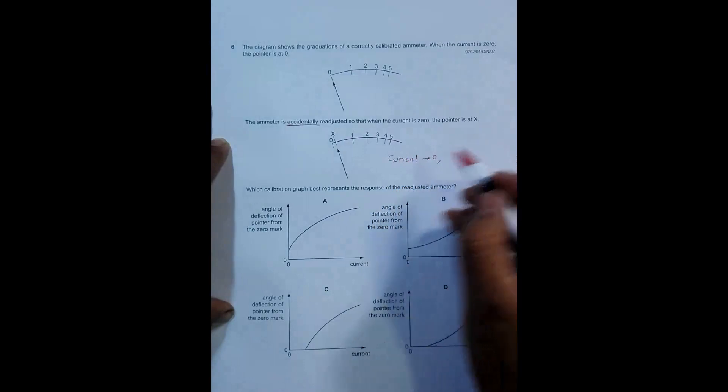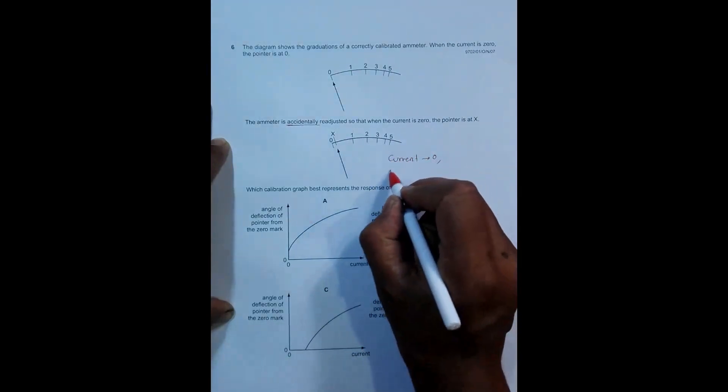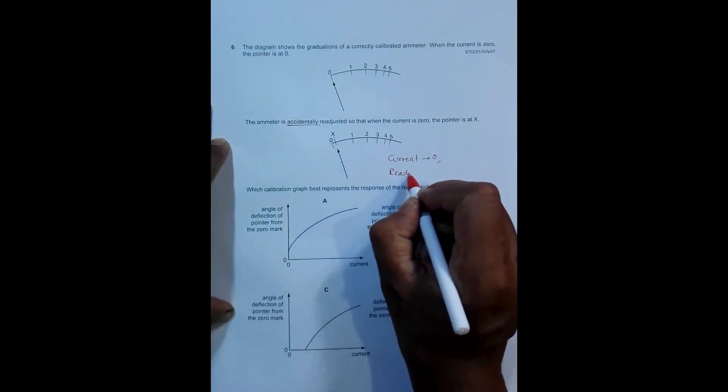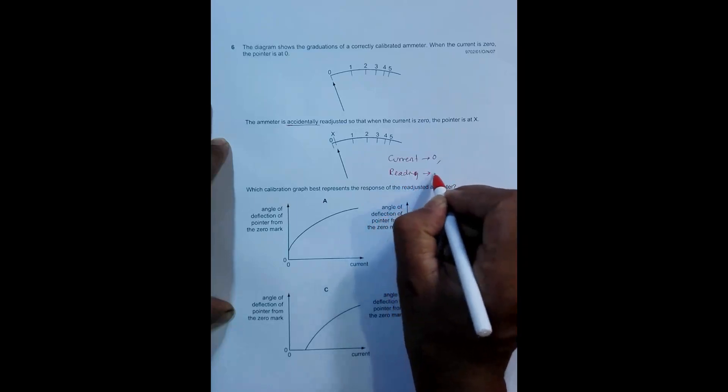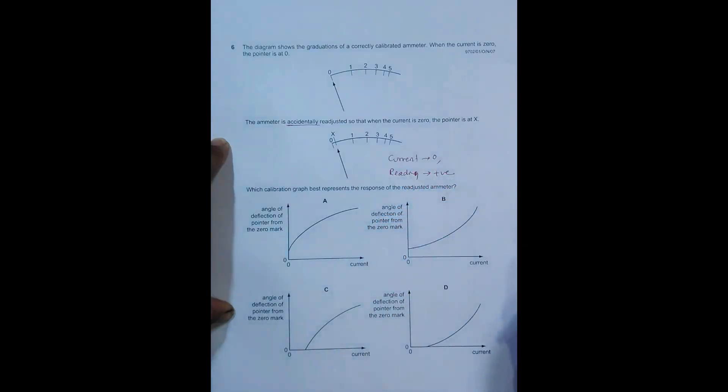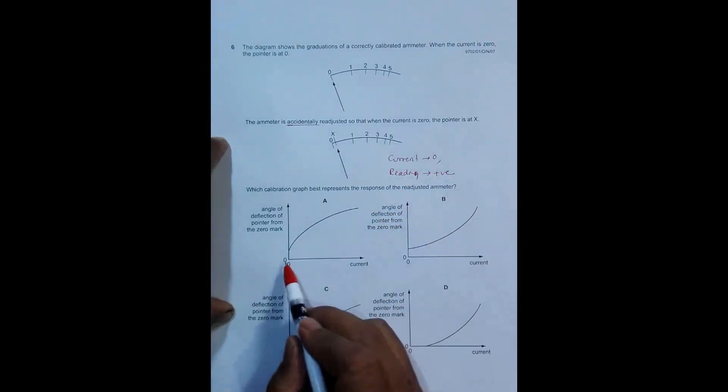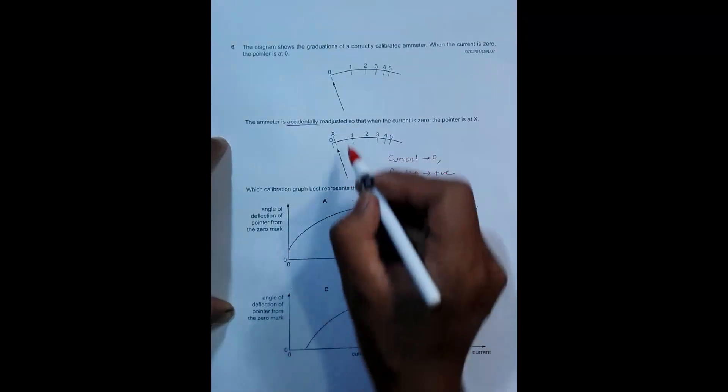As is said here, when current is equal to zero, the thing still gives us some sort of reading. The thing is still giving some sort of positive reading. So going through the choices, when current is zero there is some reading here, angle of deflection from the zero mark.